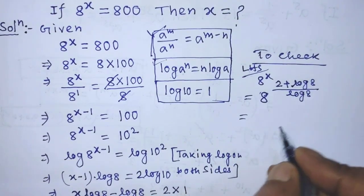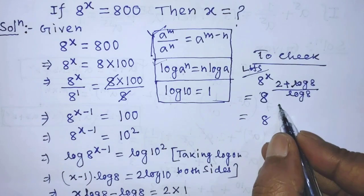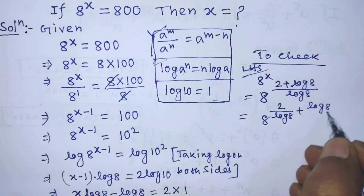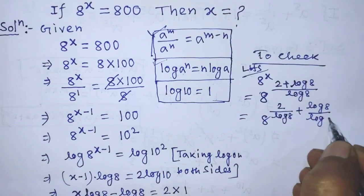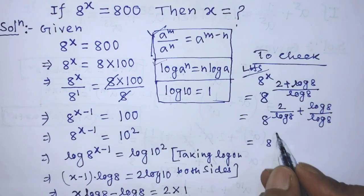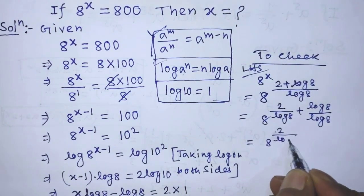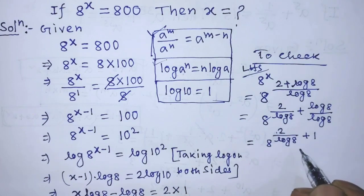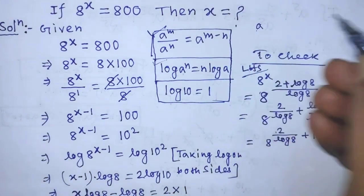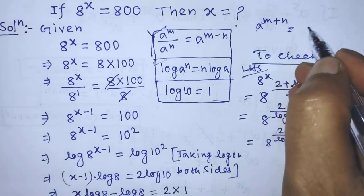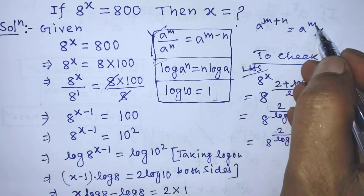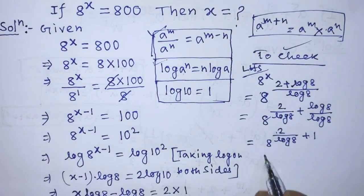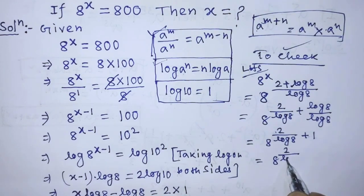After that, we write this as 8 to the power (2 over log of 8) plus (log of 8 over log of 8), which simplifies to 8 to the power (2 over log of 8) plus 1. To simplify this exponential form, we apply the formula: a to the power m plus n is equal to a to the power m times a to the power n. According to this formula, we write 8 to the power (2 over log of 8)...